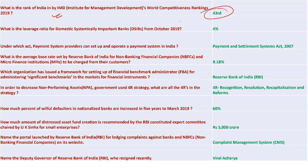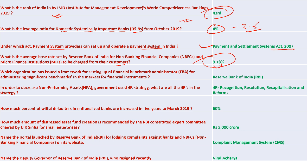The leverage ratio for Domestic Systemically Important Banks (D-SIBs) is 4%, and for other banks it is 3.5%. Payment system providers can set up and operate payment systems in India under the Payment and Settlement Systems Act 2007. The average base rate set by RBI for NBFCs and MFIs to be charged to their customers is 9.18%. RBI issued a framework for setting up a Financial Benchmark Administrator (FBA) for administering significant benchmarks in financial instrument markets. The four Rs of resolution strategy for decreasing NPA are Recognition, Resolution, Recapitalization, and Reform.